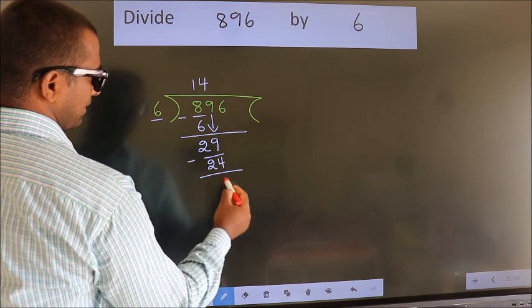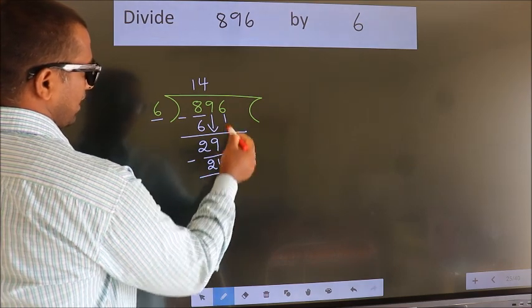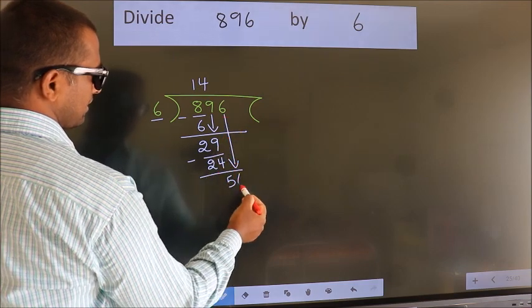Now we subtract. We get 5. After this, bring down the beside number. So, 6 down.